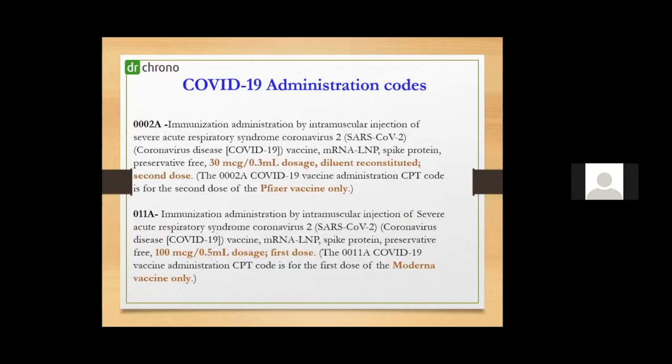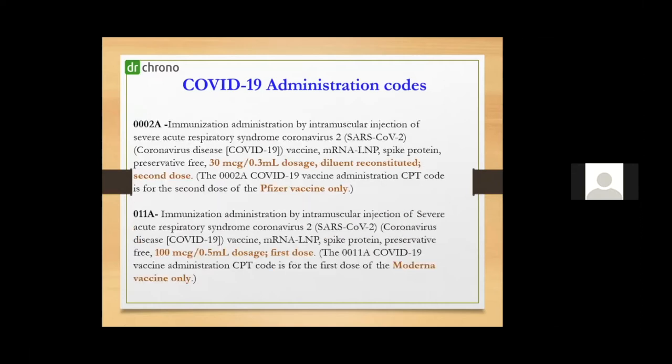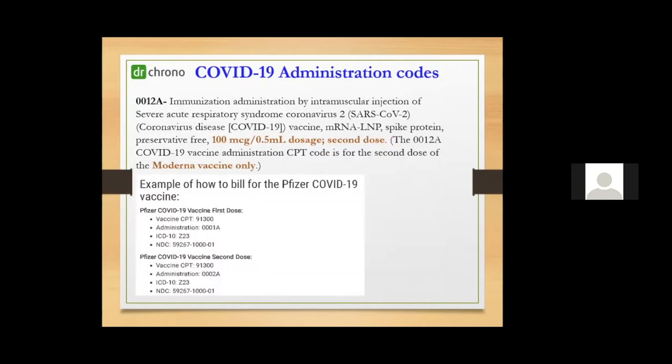Next is 0002A, also at 30 MCG per 0.3 ml, which is for the second dose of the Pfizer vaccine. So if the Pfizer vaccine first and second dose is given, those are the codes to use. Moving to Moderna vaccine: the first dose would be 0011A at a dosage of 100 MCG per 0.5 ml, and for the second dose, 0012A, also at 100 MCG per 0.5 ml.